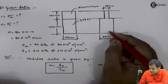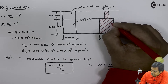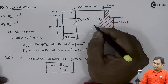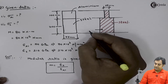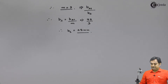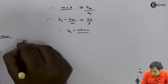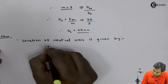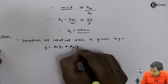The equivalent section is now completely made up of steel. To find the location of the neutral axis, I define rectangle 1 as the bottom section (75 mm × 200 mm) and rectangle 2 as the top section (25 mm × 100 mm). The neutral axis location is given by ȳ = (A₁y₁ + A₂y₂) / (A₁ + A₂).